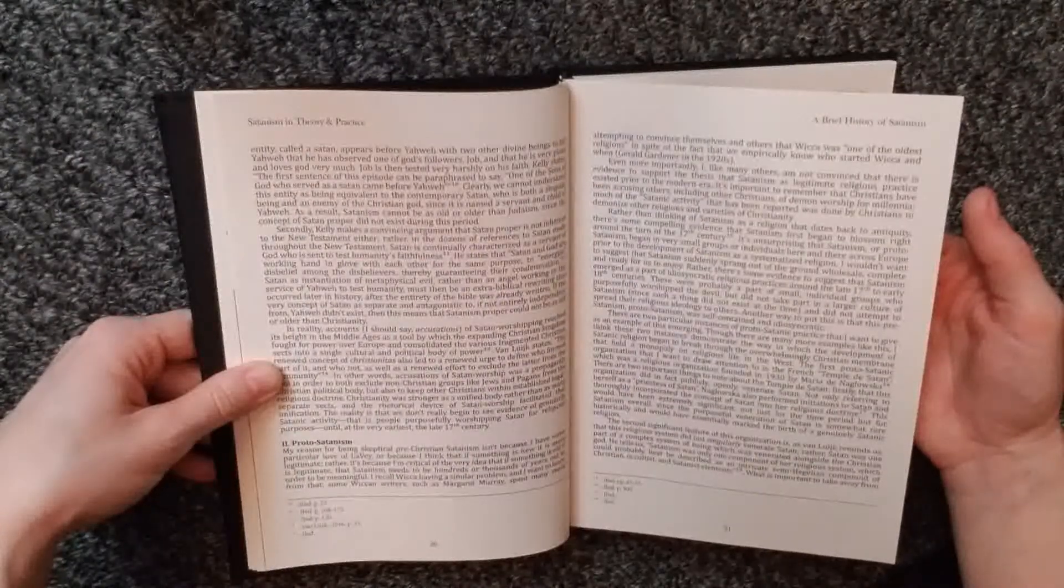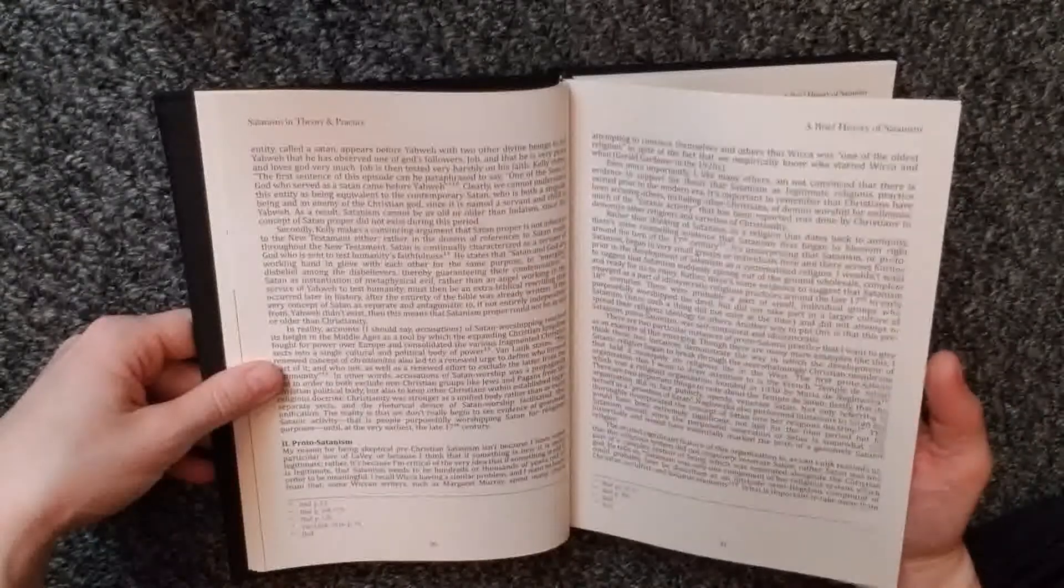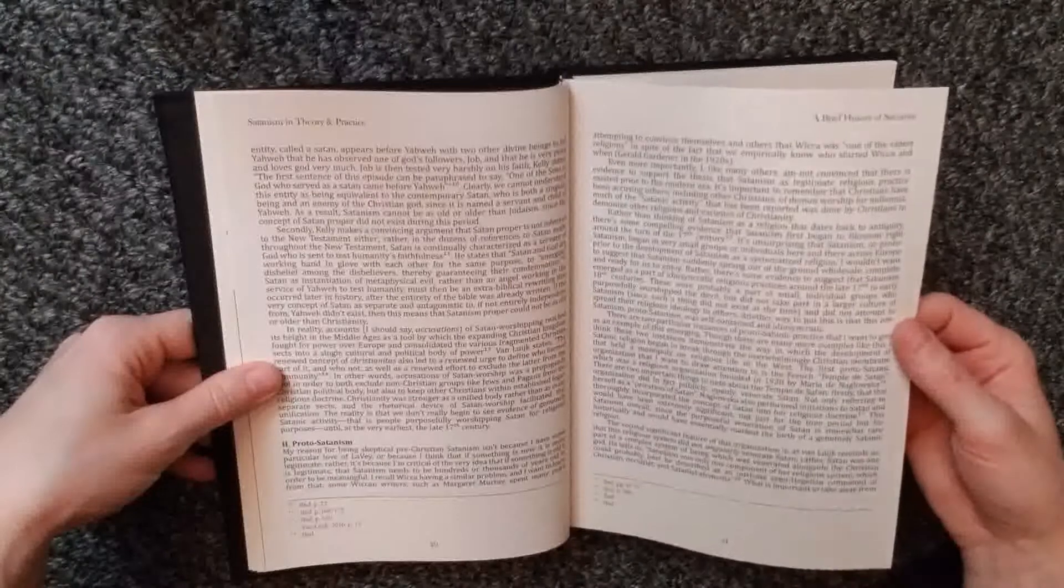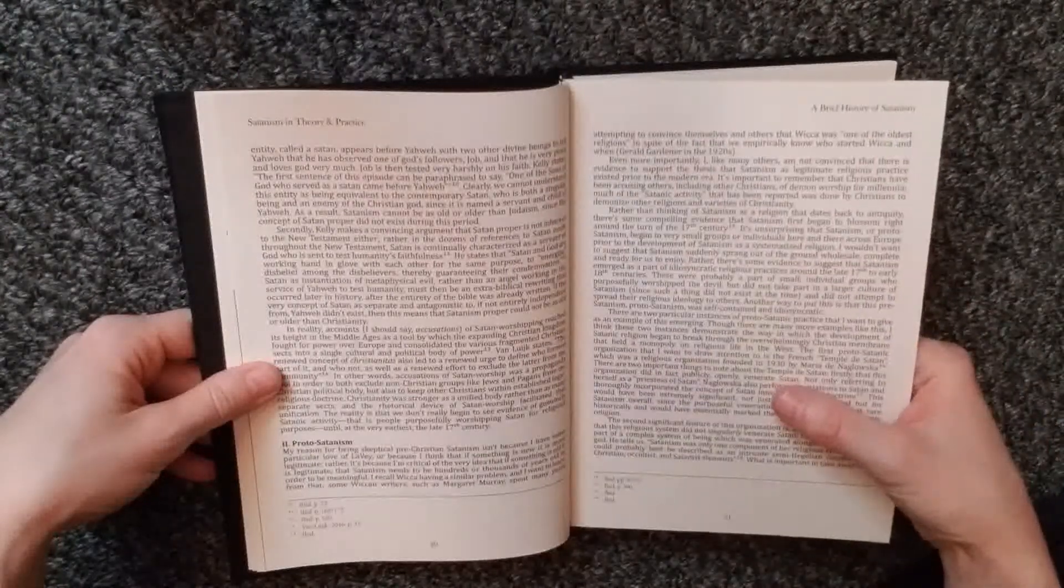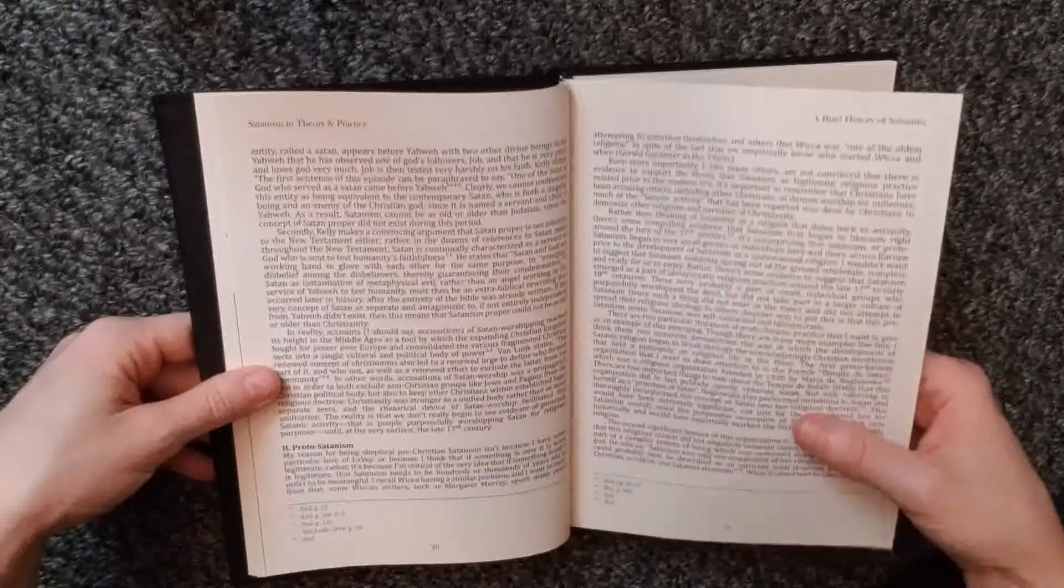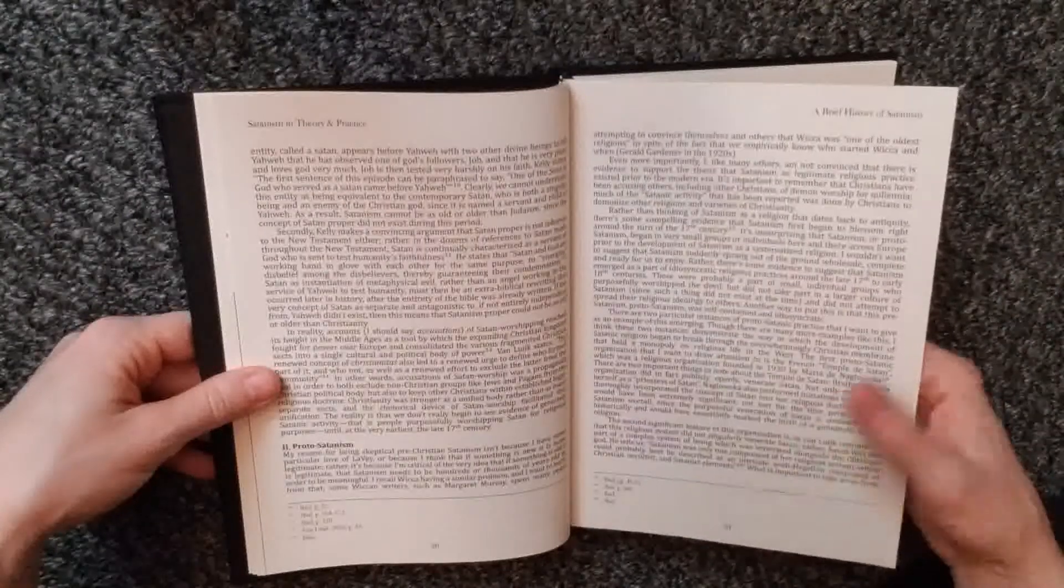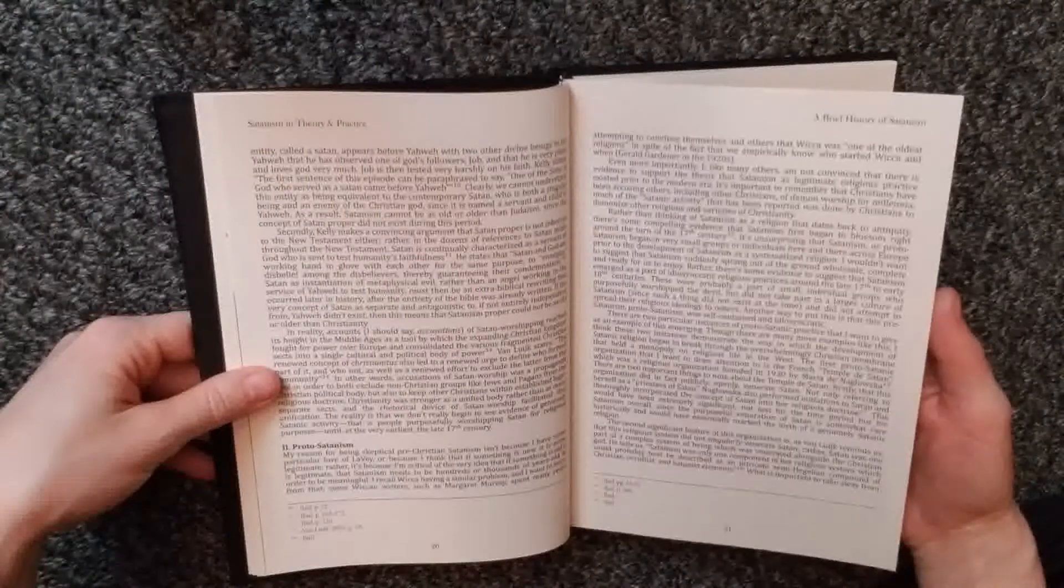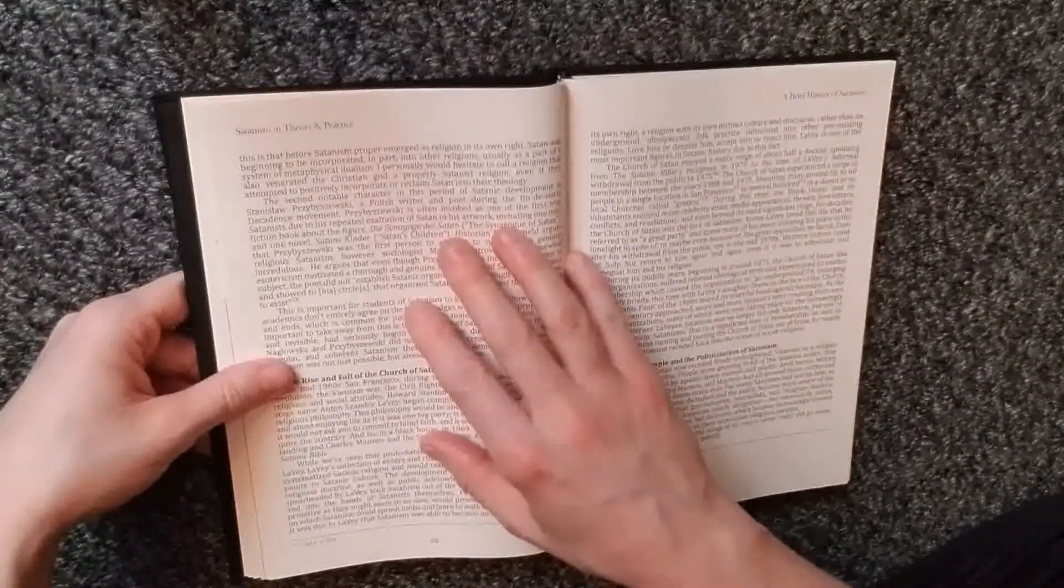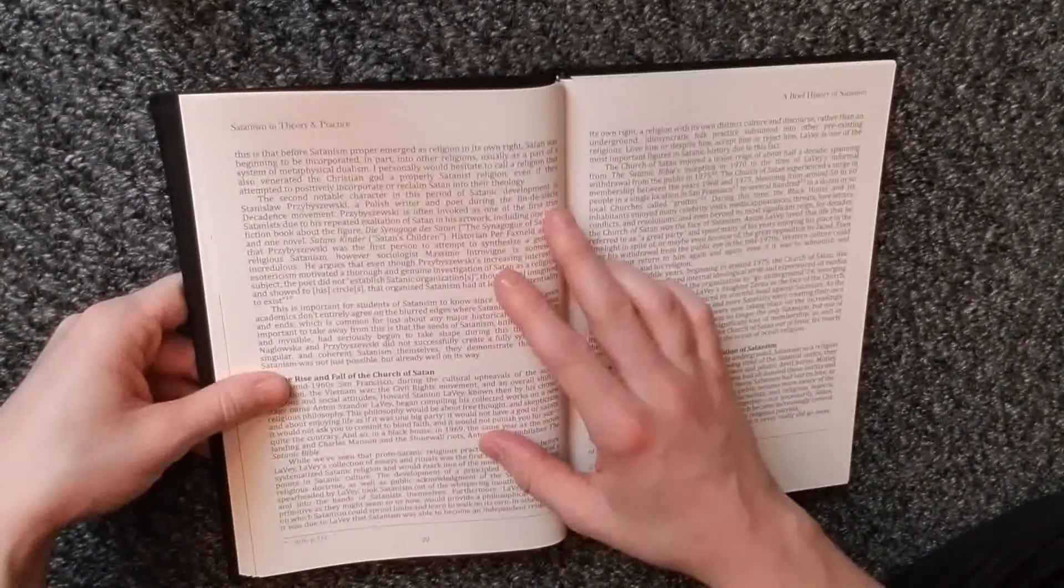It's unsurprising that Satanism or proto-Satanism began in very small groups or individuals here and there across Europe prior to the development of Satanism as a systematized religion. There's some evidence to suggest that Satanism emerged as part of idiosyncratic religious practices around the late 17th to early 18th centuries. These were probably a part of small individual groups who purposefully worshipped the devil, but did not take part in a larger culture of Satanism. First proto-Satanism that I want to draw attention to is the French Temple de Satan. That's pretty cool.